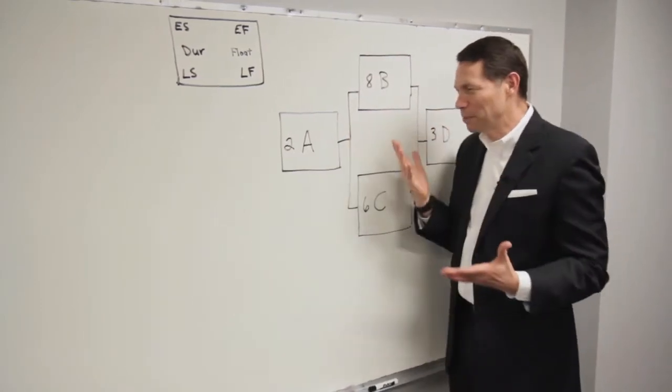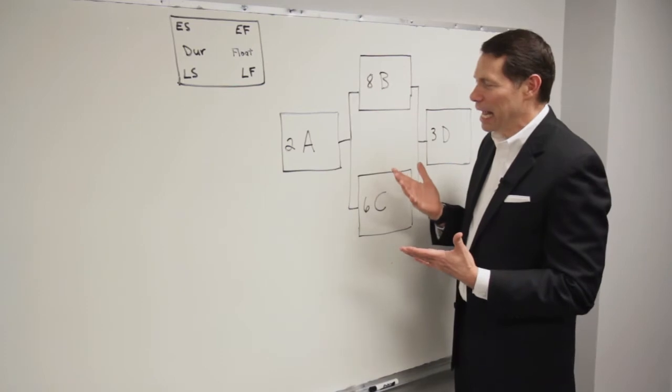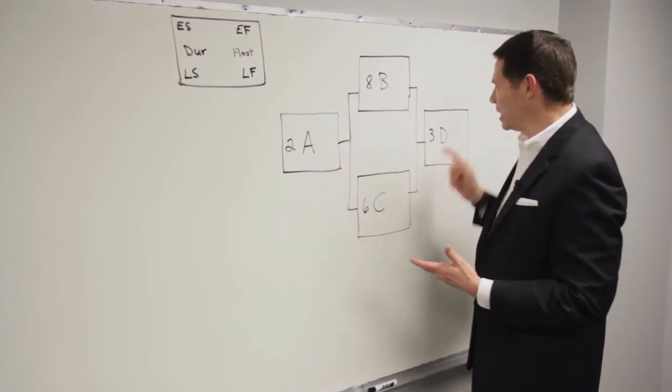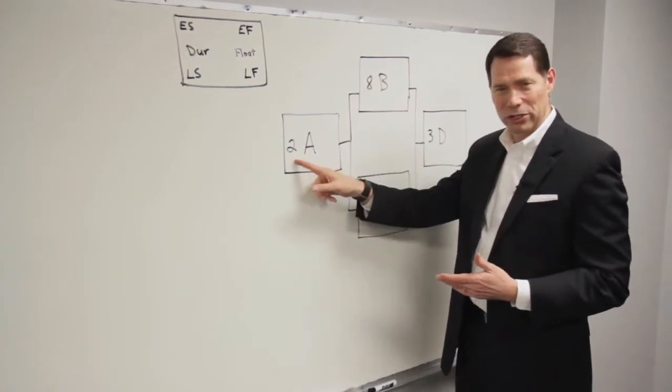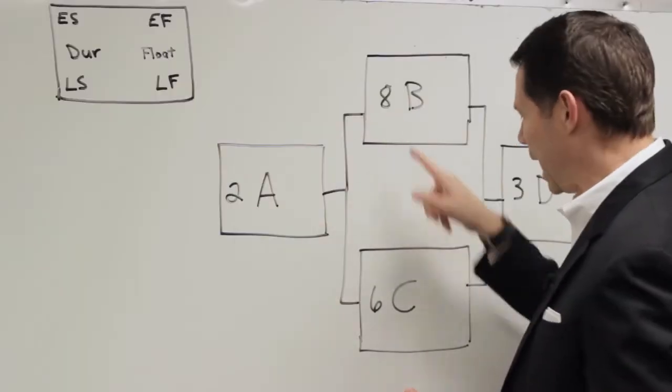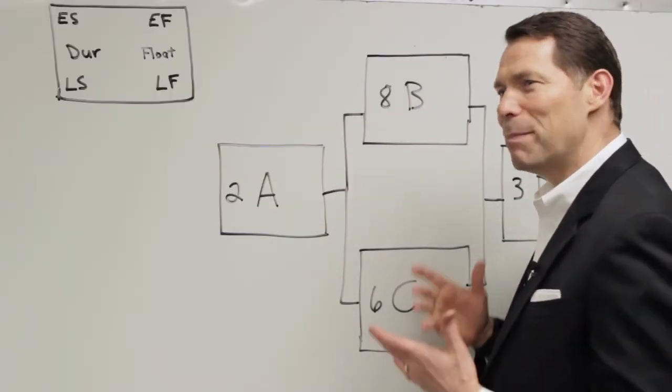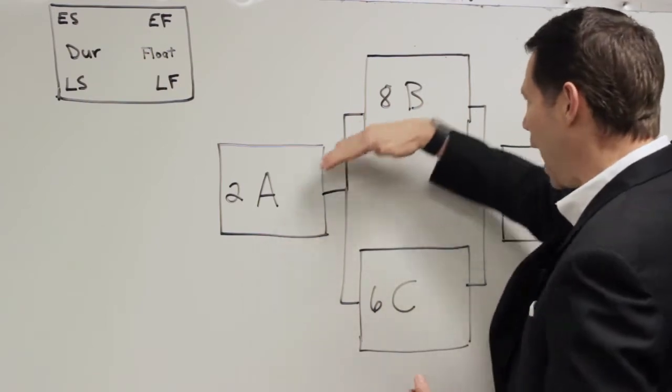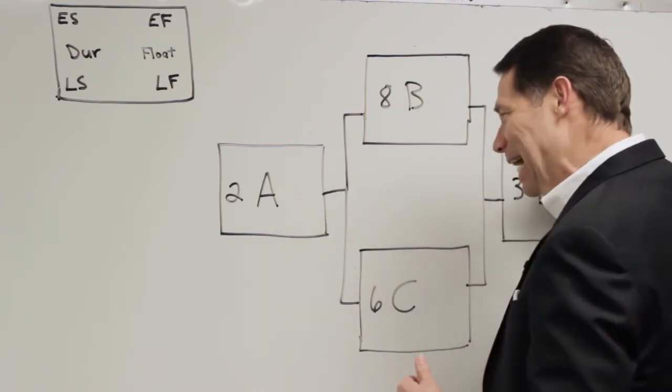Let's take a look at this simple four task project here. I've got activity A, B, C, and D. Let's say these are durations. I have a duration of two and eight and six and three. How many paths do I have here? I've got two paths. I've got ABD and ACD.